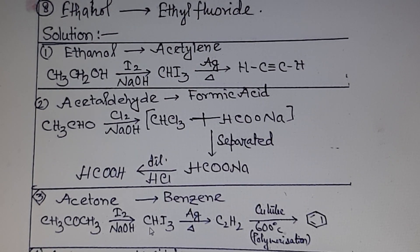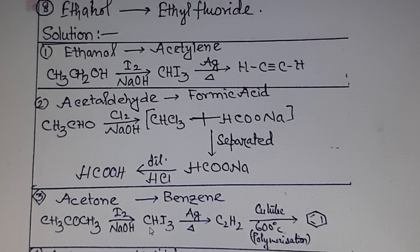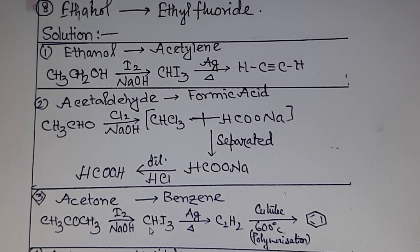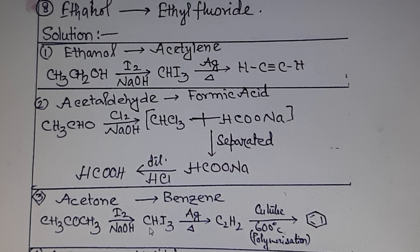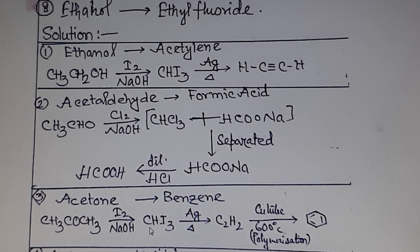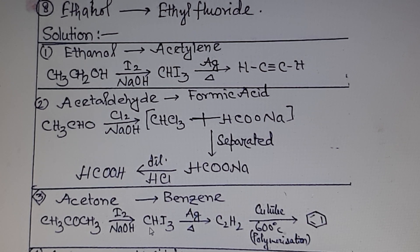Problem 1: ethanol to acetylene. You can go for the iodoform reaction — ethanol undergoes the iodoform reaction to form iodoform. Iodoform then reacts with silver dust in the presence of heat to form acetylene. This is a very popular reaction — this is the classic preparatory method of acetylene from iodoform in Class 11.